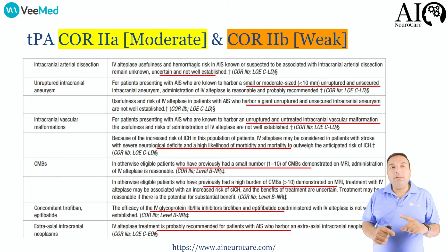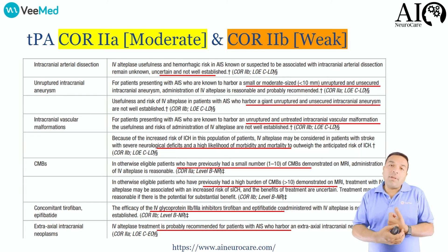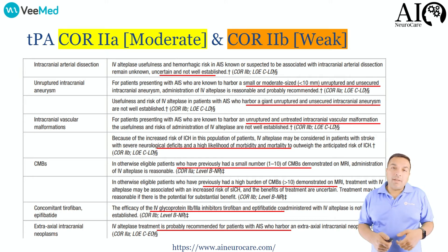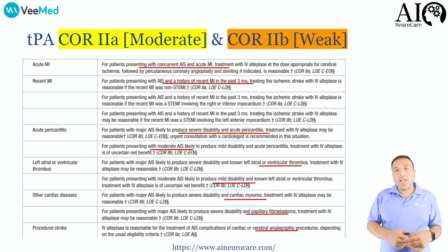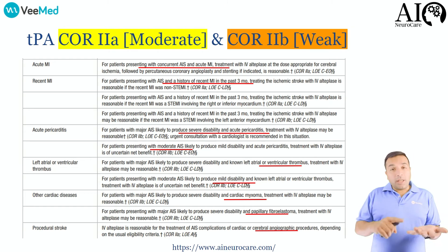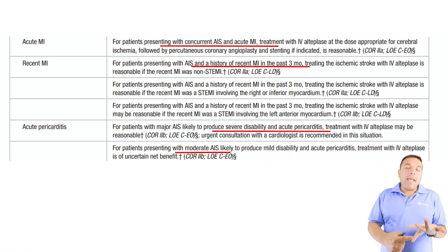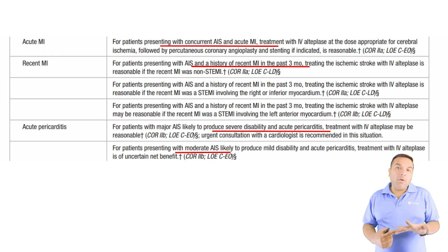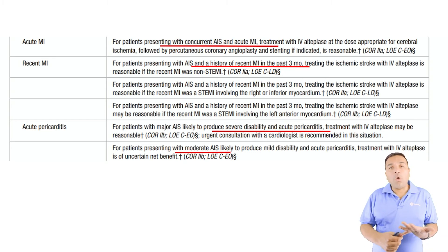For extracranial extra-axial intracranial lesions such as meningiomas, go ahead and give TPA. The level of evidence is moderate — COR 2a. In patients presenting with acute MI or recent MI, give TPA but use the cerebral stroke dose, not the MI dose. In both cases the recommendation is moderate, COR 2a.